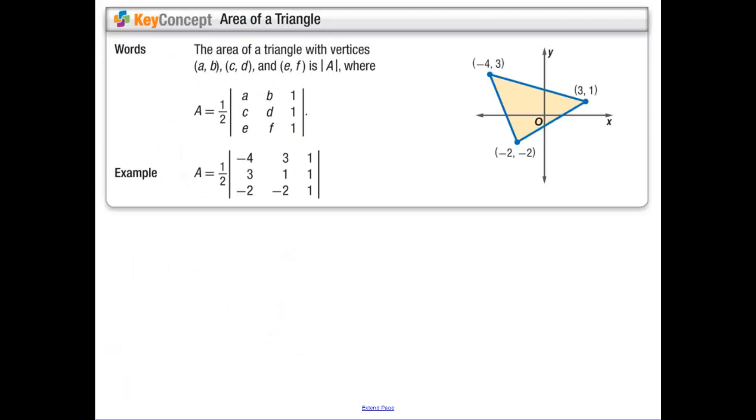Our next example: if you're given 3 vertices of a triangle in a plane, you can find the area of that triangle by taking one half the value of the determinant of a matrix. Because you can only find area of square matrices, put in the points A, B, and your third column is always 1.